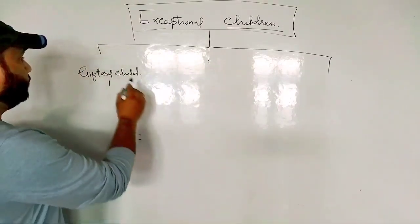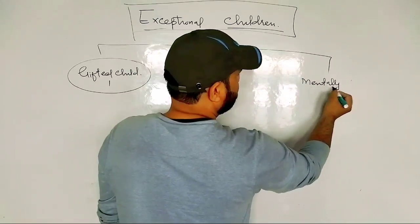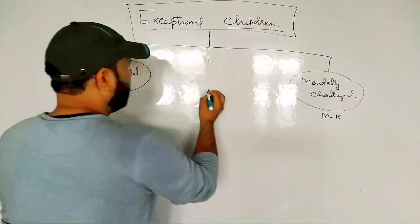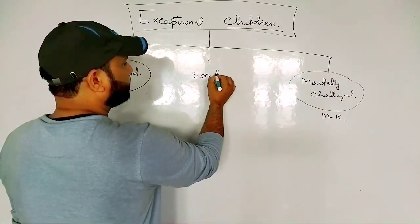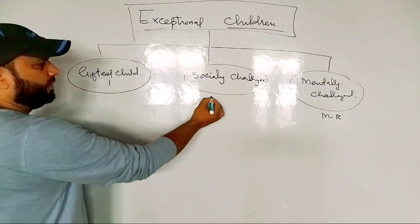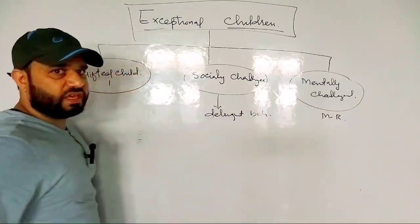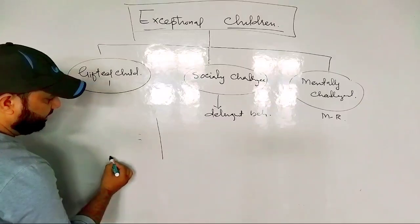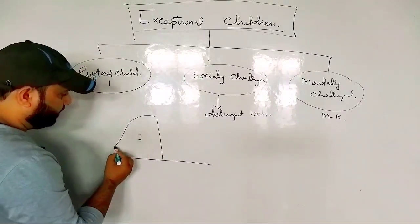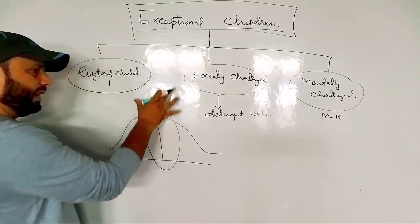One classification of exceptional children is gifted child, another is mentally challenged, and another is socially challenged. These are the main categories, and they deviate from the normal line.